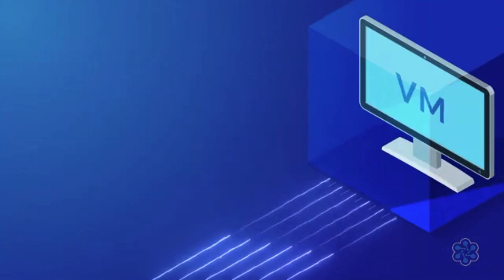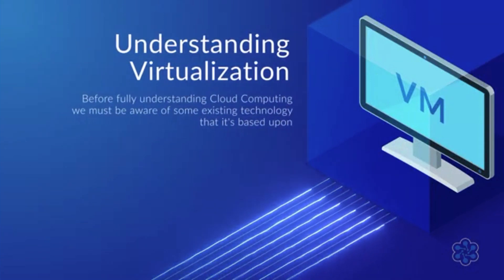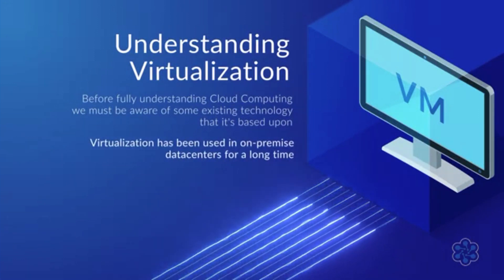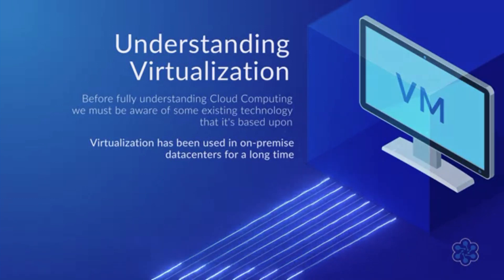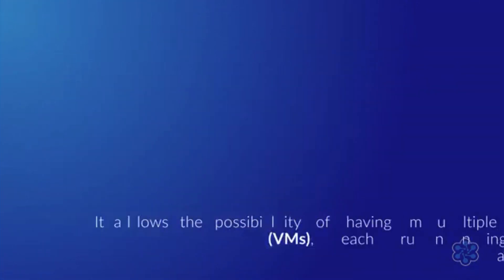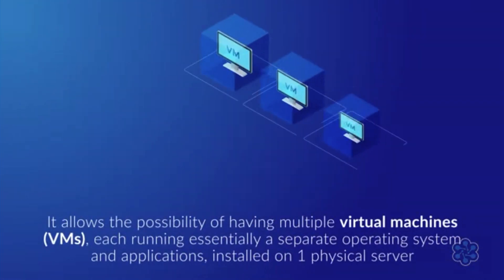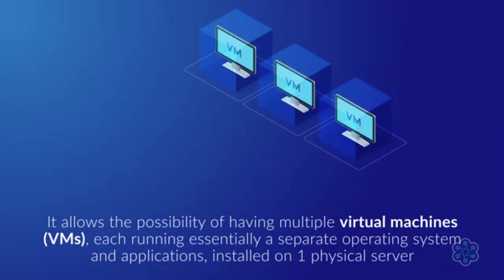Before fully understanding cloud computing, we must be aware of some existing technology that it is based upon — that being virtualization. This has been used in on-premise data centers for a long time, and it maximizes the power of cloud computing; without virtualization, it would simply not be possible. In essence, virtualization allows the possibility of having multiple virtual machines (VMs), each running a separate operating system and applications, all installed on one physical server. These VMs run at the same time without being aware of each other's existence, while sharing the underlying hardware resources.